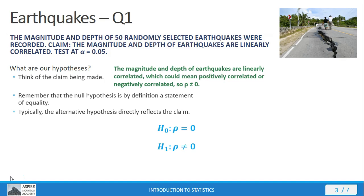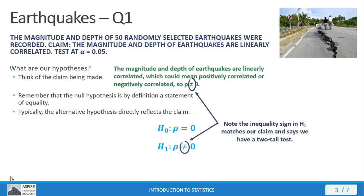It's very rare that you're going to see something different here. It usually comes out different if you specify positive or negative correlation in your claim, but generally you're not going to make that specific claim — it's just generally looking for linear correlation. And so this is what we end up with. We have a match between our claim and the alternative hypothesis, and we have a two-tailed test.